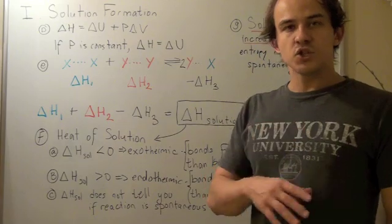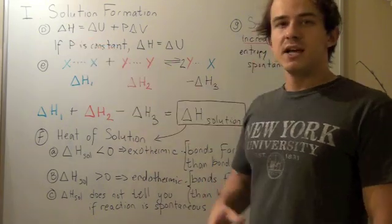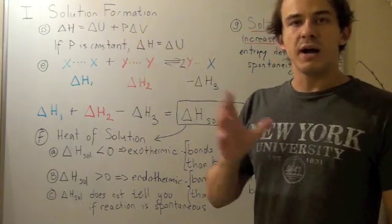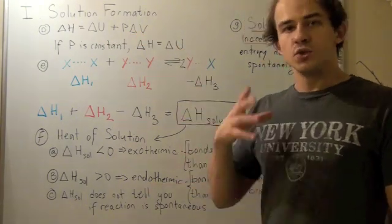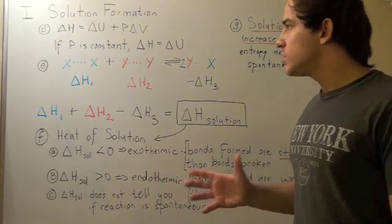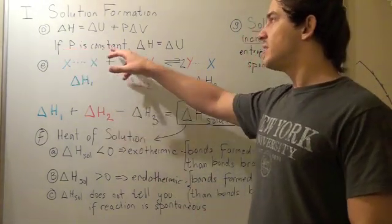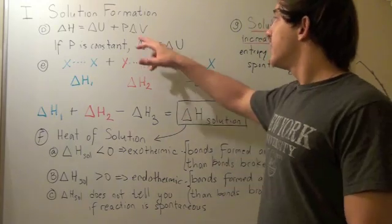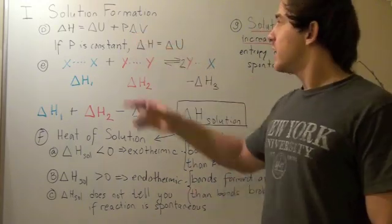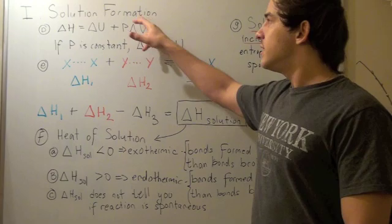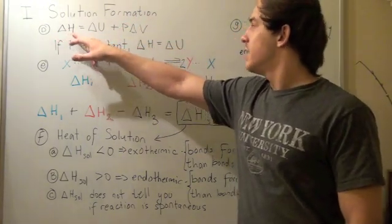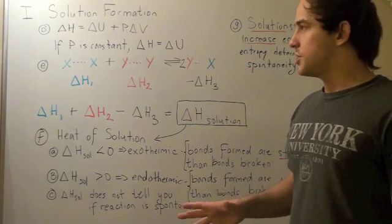Now from another lecture, we saw that change in enthalpy is equal to change in internal energy plus PV work done, or the work done by the system on the environment to create that system. We also saw that if pressure is held constant and the number of moles is held constant, the change in volume is zero. If the change in volume is zero, this term becomes zero. So we can say change in enthalpy is simply equal to change in internal energy.